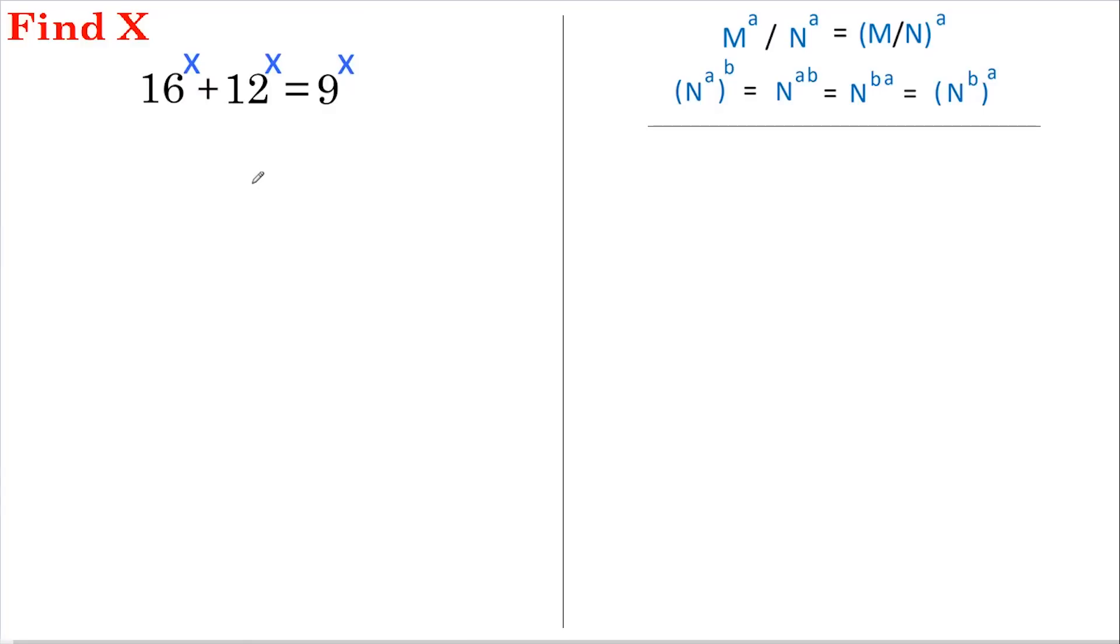Hi, welcome back. Today I'm going to solve this rather awkward looking exponent problem. Let's start by dividing everything by 16 to the power of x, so we get 16^x over 16^x plus 12^x over 16^x equals 9^x divided by 16^x.